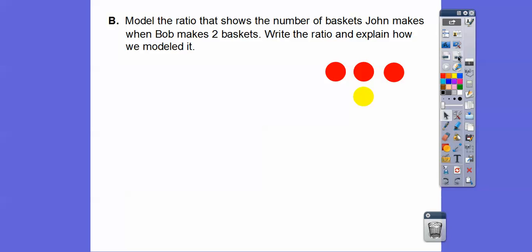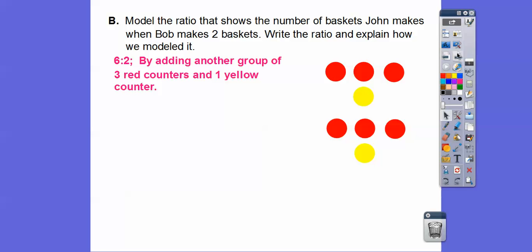Now we'll model that ratio to show the number of baskets John makes when Bob makes two baskets. Bob is the yellow counter, so here's one basket. By adding another group of three to one, we now have two yellow counters for Bob's two baskets, and John made three plus three — or six. So the ratio is six to two: six red counters to two yellow ones, by adding one more group of three red counters and one yellow counter.